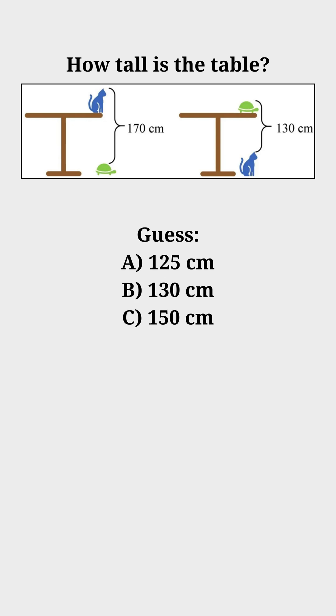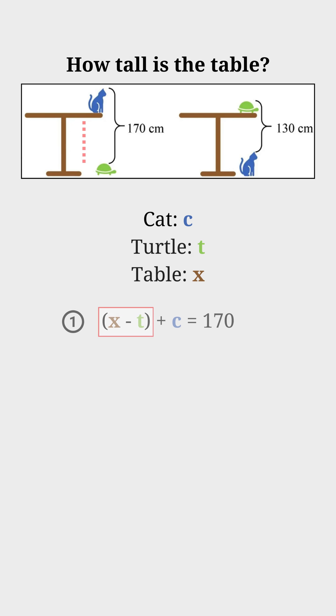A, B, or C? Let's call the cat C, the turtle T, and the table X. Now we can make two equations for the two pictures. X minus T is the distance from the top of the turtle to the top of the table, as shown in red. Then that plus C is 170.